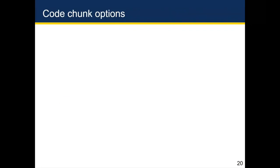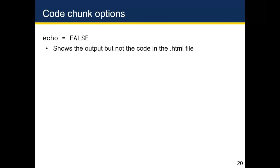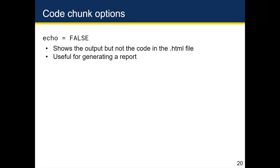There are a variety of code chunk options, but we'll focus on three in this class, and for the most part you'll only need two of them. The first common option is echo equals false, which shows the output of your code but not the code itself in the HTML file. This is really useful for generating a report to share with someone who doesn't know R, whether a client or an administrator.